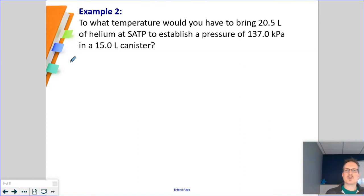So to what temperature would you bring 20.5 liters, so that's going to be V1, of helium at SATP. So it's at SATP. So I look it up. That means my temperature is 298.15 kelvin. My pressure is 100 kilopascals. And we're going to establish a new pressure, so P2 of 137.0 kilopascals and a new volume of 15.0 liters. So we are trying to find the new temperature, so T2.